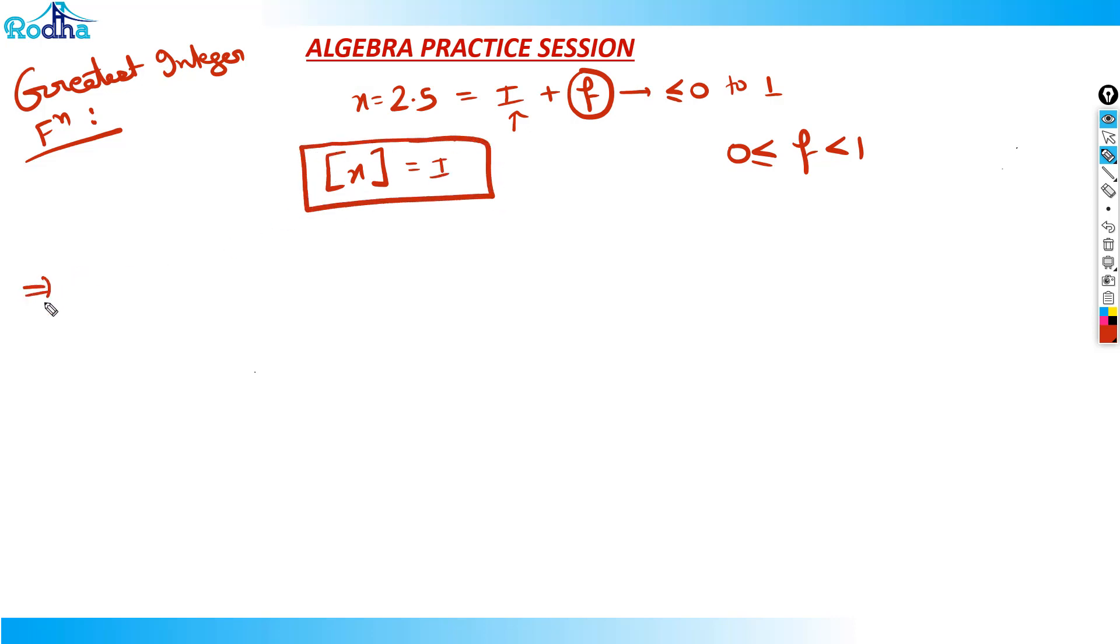For example if we have 3.9, I can write this as i plus f. What is i here? i is 3 and what is f here? f is 0.9. So 3 plus 0.9. That means greatest integer function of 3.9 should be equal to i, which means 3 here.